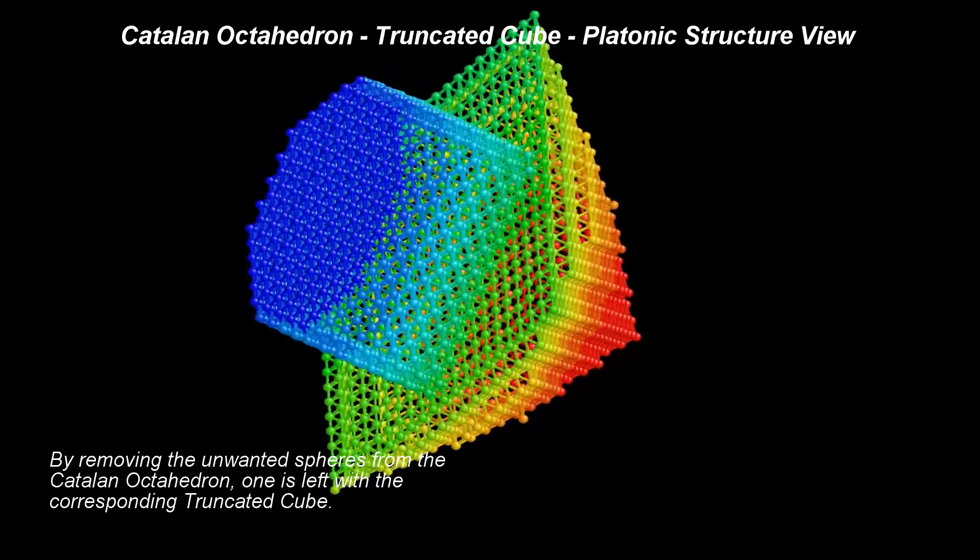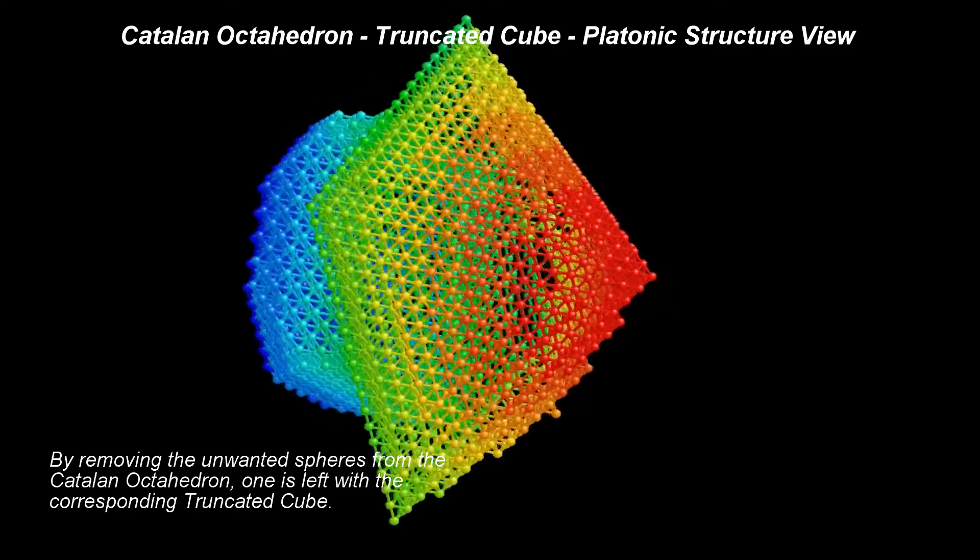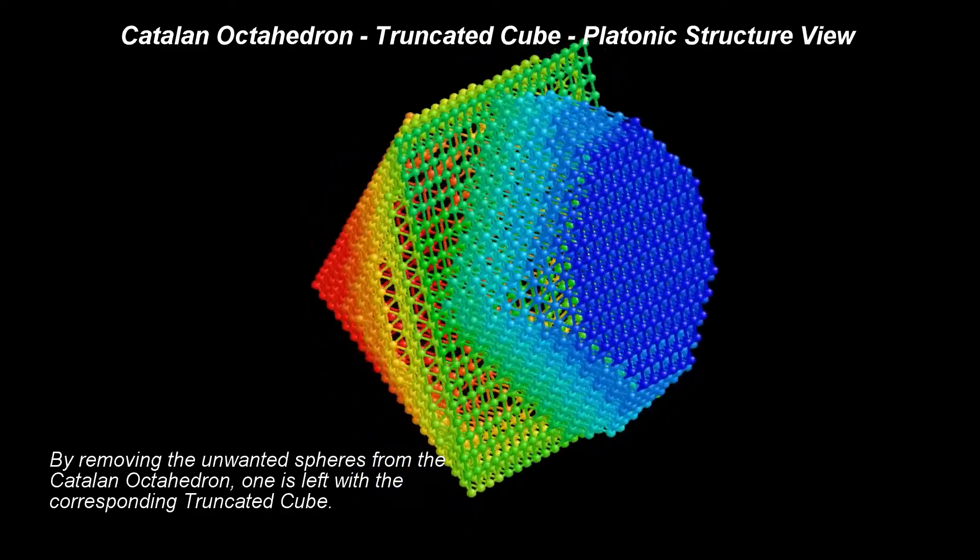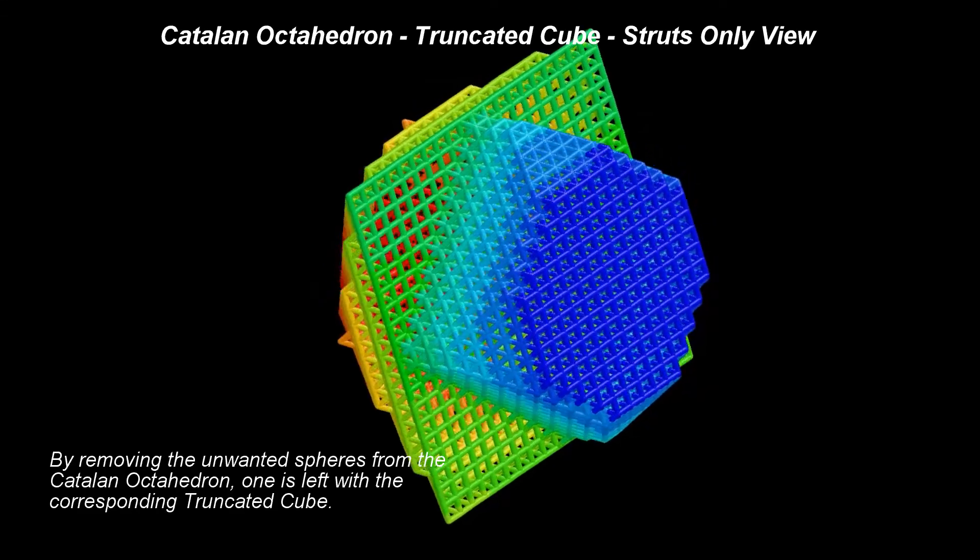This was something to be expected. Remember, the size of the cube is incommensurable with the size of the truncated cube. By removing the unwanted spheres from the Catalan octahedron, one is left with the corresponding truncated cube.